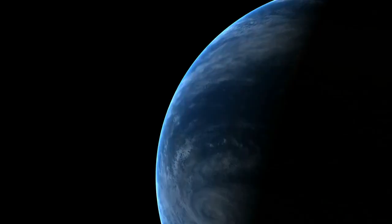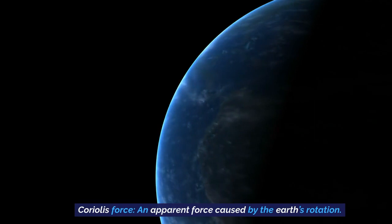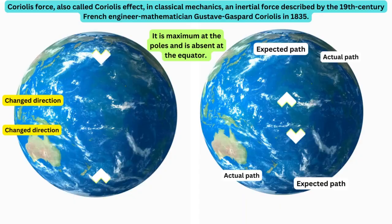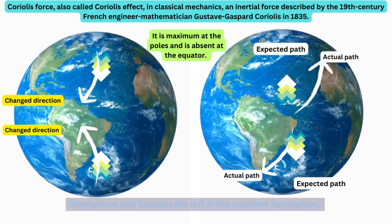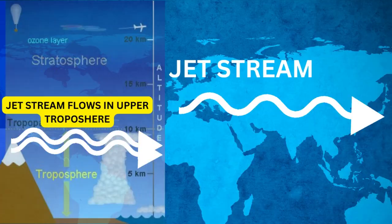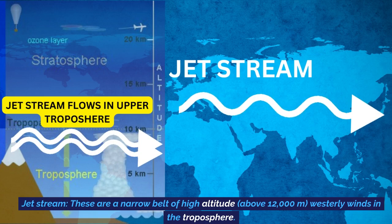The next important topic related to India's climate is the Coriolis force, which is an apparent force caused by the Earth's rotation. The Coriolis force is responsible for deflecting winds towards the right in the northern hemisphere and towards the left in the southern hemisphere. This is also known as Ferrel's law.